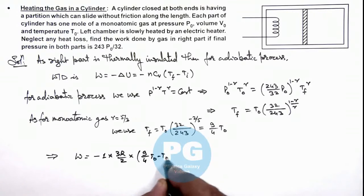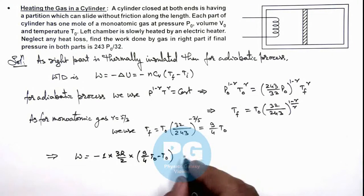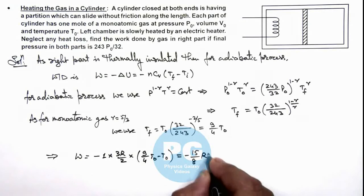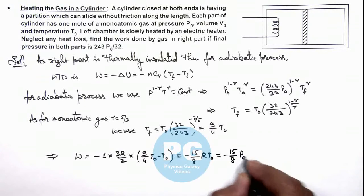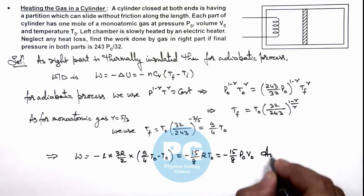Minus t_not. On simplifying this is giving us minus 15/8 R t_not, which can also be written as minus 15/8 p_not v_not. That is the result of this problem.